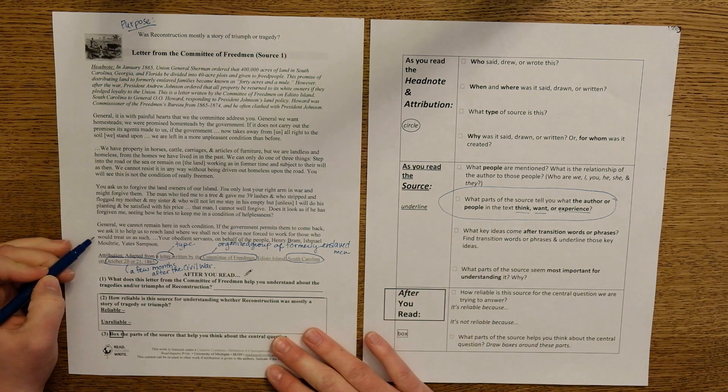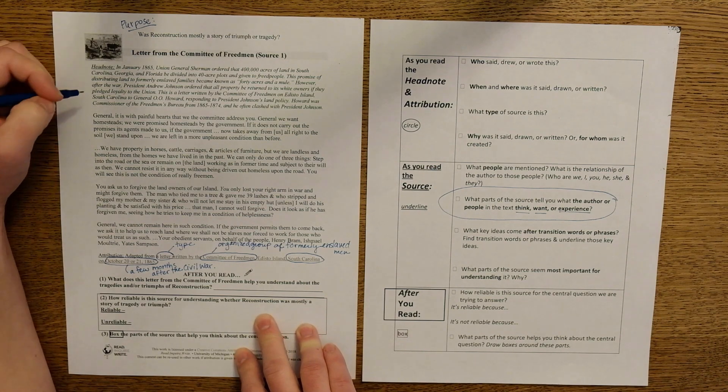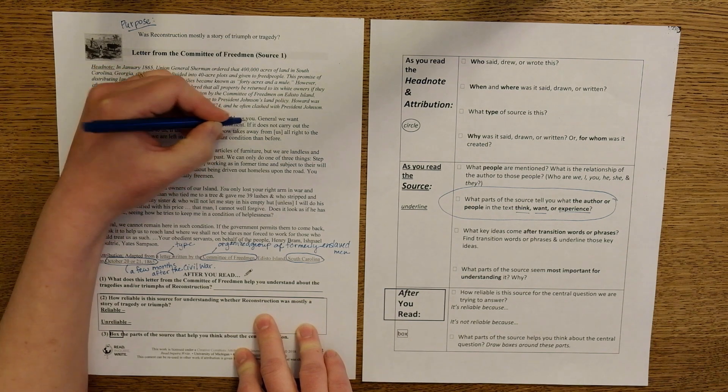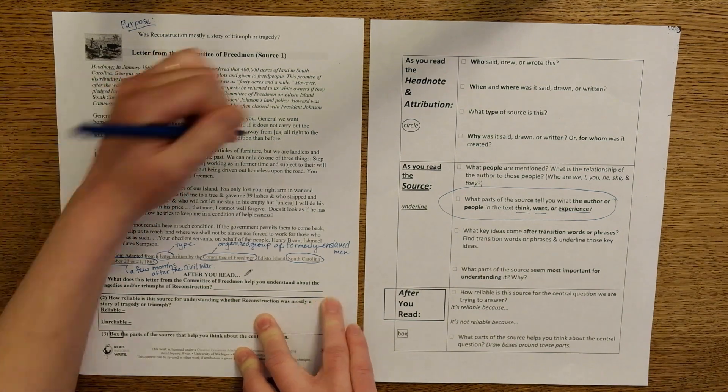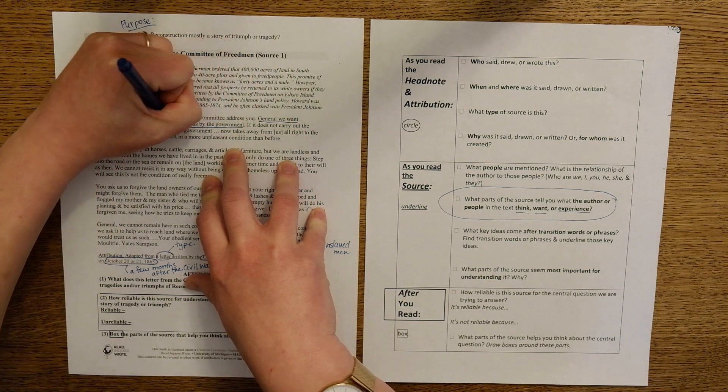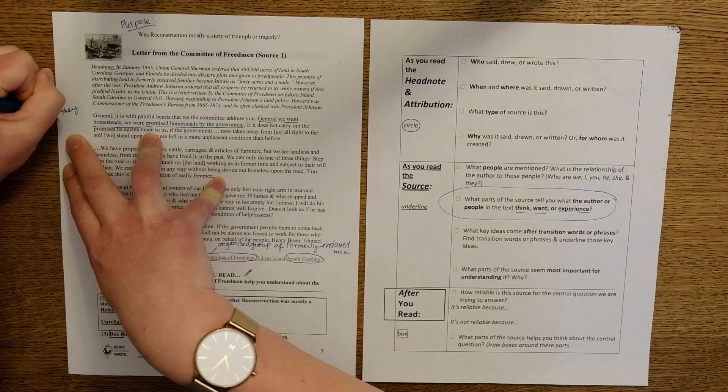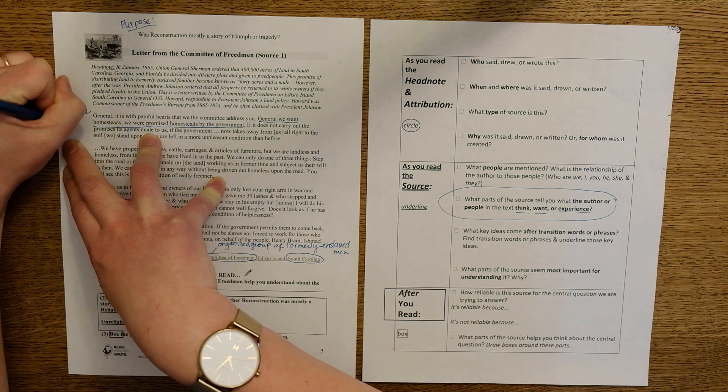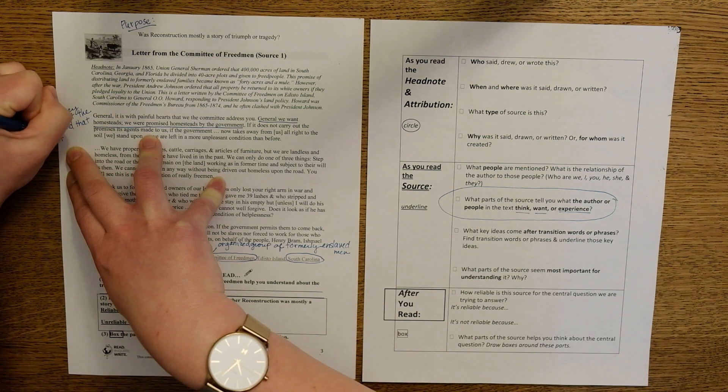Let's do the first and the last paragraphs together. You can do the middle two paragraphs with a partner. It says, General, it is with painful hearts that we the Committee address you. General, we want homesteads. We were promised homesteads by the government. I'm going to underline those two sentences because that's something that they want and something they experienced. So this Committee, they want the homesteads or the land that they were promised. They want the land that the government promised.